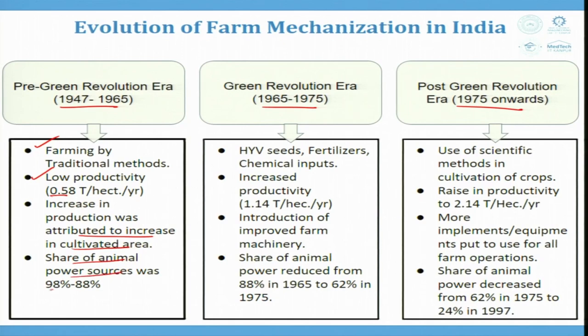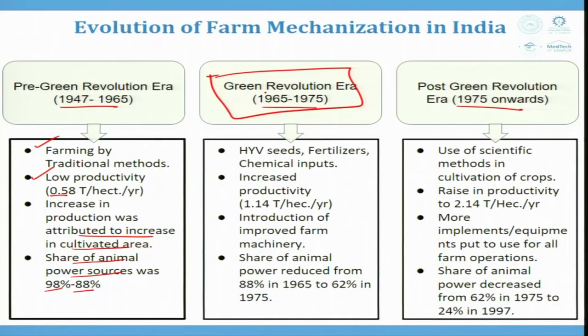Increase in production was attributed to increase in cultivated area. In the second era, the green revolution from 1965 to 1975, India was still food-scarce. With HYV seeds, fertilizers, and chemical inputs, productivity increased from 0.58 to 1.14 tons per hectare per year. Improved farm machinery was introduced and the share of animal power reduced from 88 percent in 1965 to 62 percent in 1975.